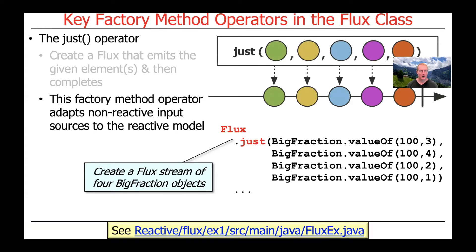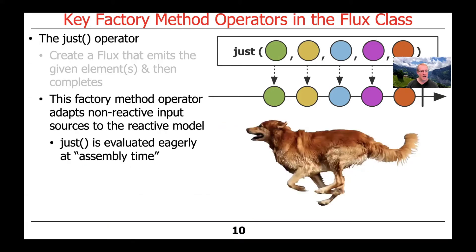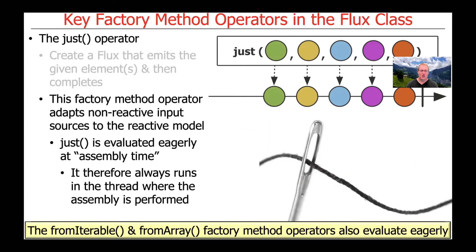You can find this example in the link at the bottom of the slide, and we'll be covering this example later as part of the lesson when we get to the case study. Keep in mind that just is evaluated eagerly at assembly time, just like Mono.just is — so it always runs in the thread where the assembly is performed. The fromIterable and fromArray factory method operators also evaluate eagerly, and we'll compare and contrast that with another method later that evaluates things lazily.